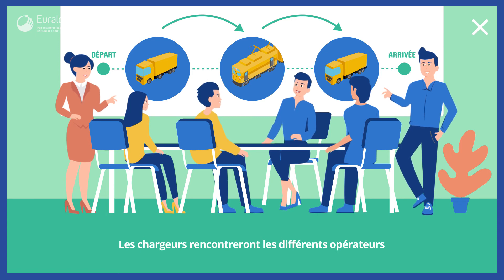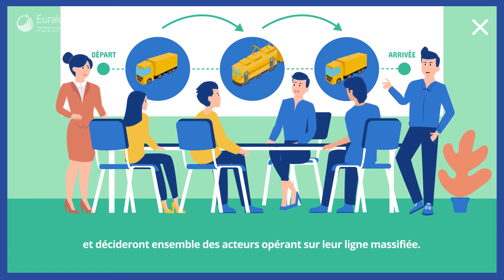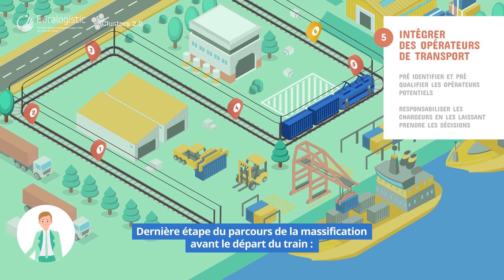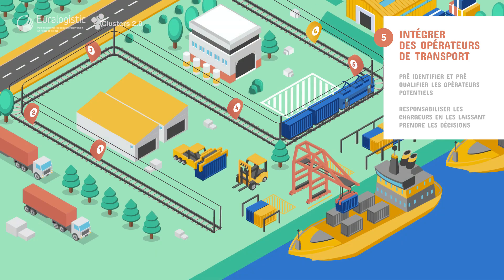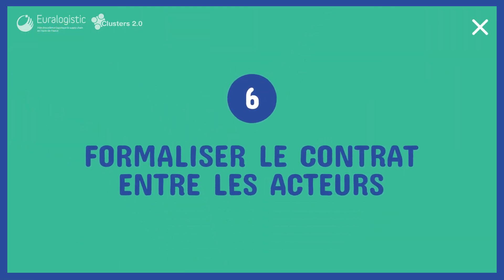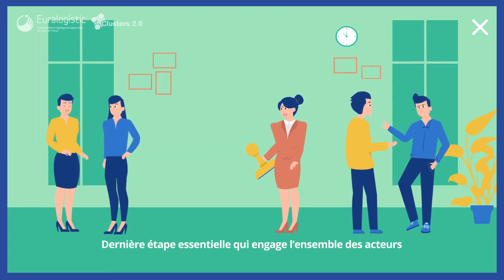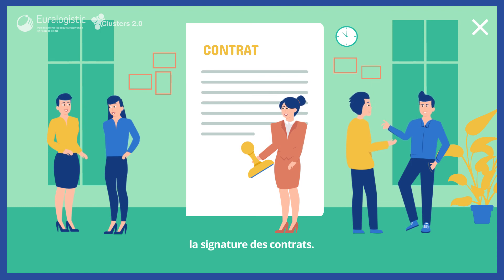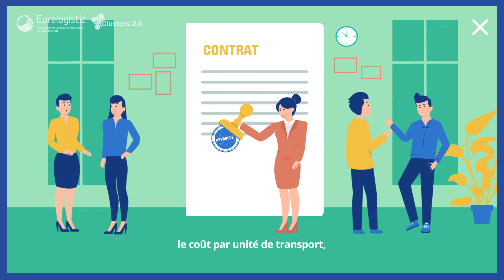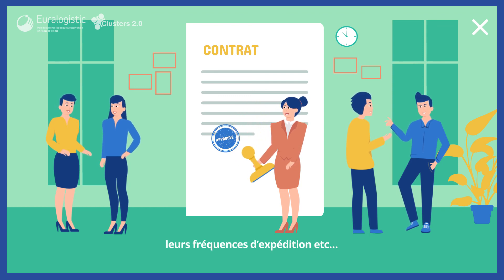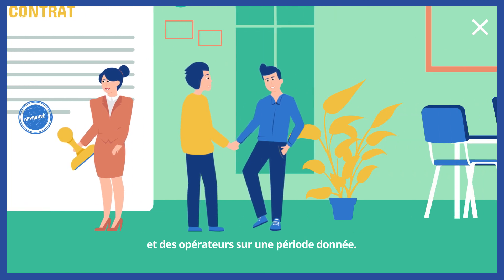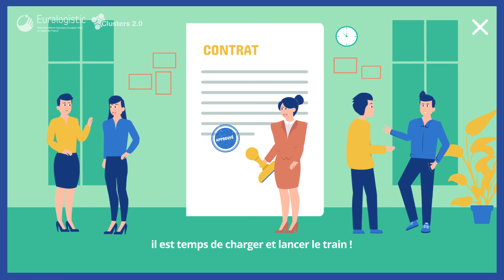Les chargeurs rencontreront les différents opérateurs et décideront ensemble des acteurs opérants sur leurs lignes massifiées. Dernière étape du parcours : la formalisation du contrat entre les acteurs. C'est l'étape essentielle qui engage l'ensemble des acteurs autour du projet de massification des flux de marchandises par le train. C'est à ce moment que sont conclus le coût par unité de transport, les volumes engagés par chargeur et leurs fréquences d'expédition. Cette étape permet de garantir l'engagement des chargeurs et des opérateurs sur une période donnée. La ligne massifiée est désormais actée. Il est temps de charger et lancer le train.